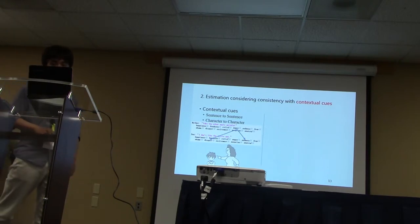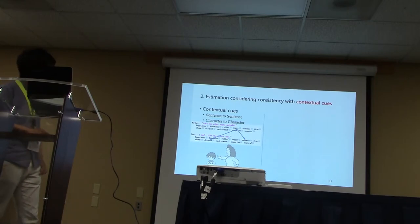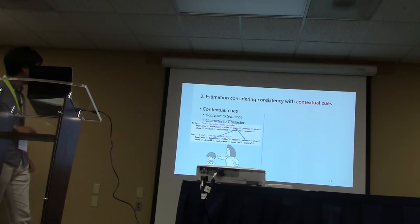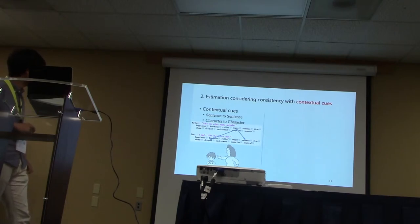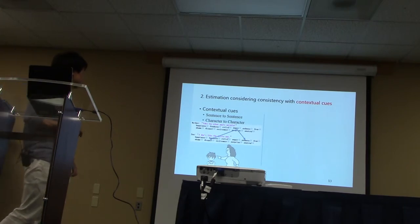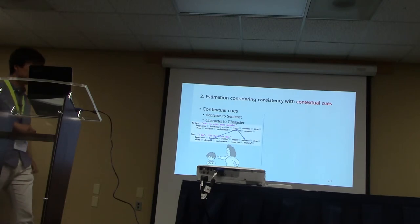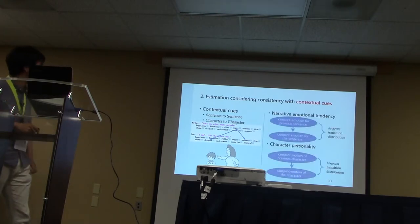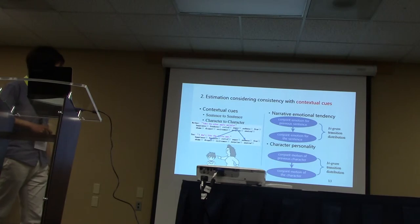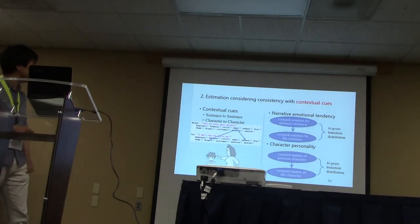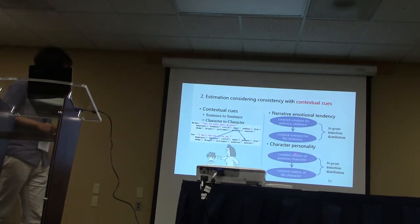We model the emotional consistency as the distribution over conjoined emotions. The narrative emotional tendency is modeled as the distribution over conjoined emotions for all sentences, and the character personality is modeled as the distribution over conjoined emotions for sentences spoken by each character. After considering emotional consistency, the true conjoined emotion for a sentence must remain consistent with the narrative emotional tendency and character personality. Furthermore, the conjoined emotions that a sentence or character expresses likely relate to the emotions expressed by the previous sentence or character. So it is beneficial to incorporate contextual cues. The narrative emotional consistency and character personality are learned using background transition distributions, meaning the conjoined emotion expressed by a sentence is conditional on the conjoined emotion expressed by the previous sentence.